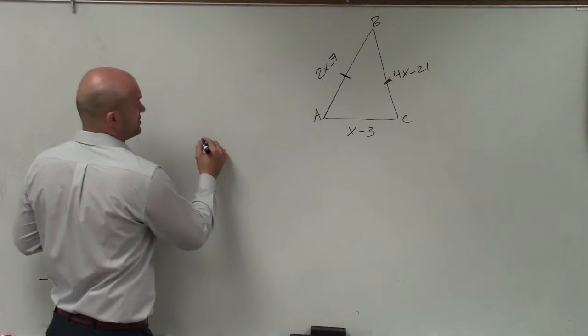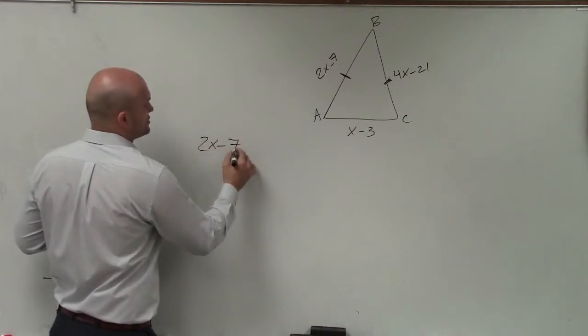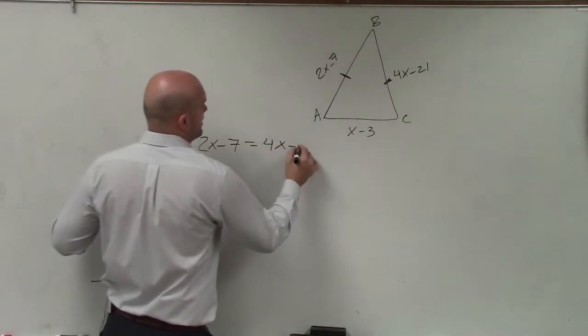And I have a missing variable, which is x. So therefore, I can set up an equation. 2x minus 7 is equal to 4x minus 21.